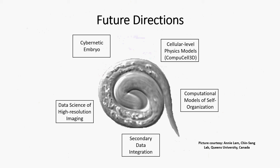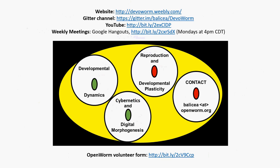Future directions for the project include building cellular-level physics models, looking at self-organization as a mode of organizational information, looking at things like cybernetic models, and doing the data science of high-resolution imaging and other types of data sciences applied to this problem.